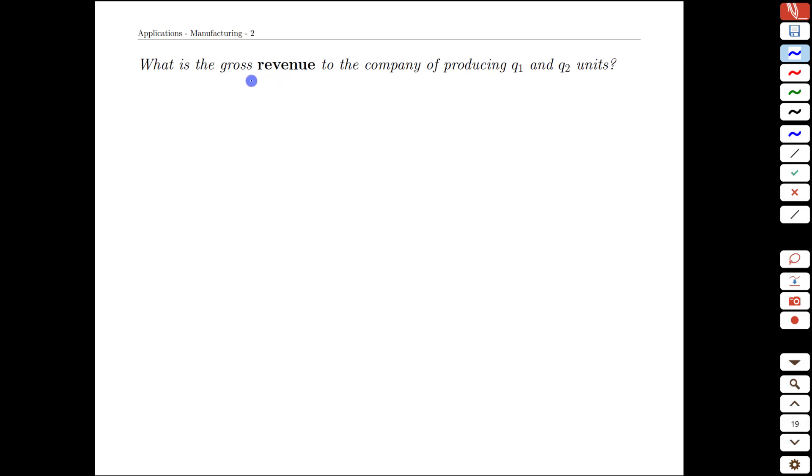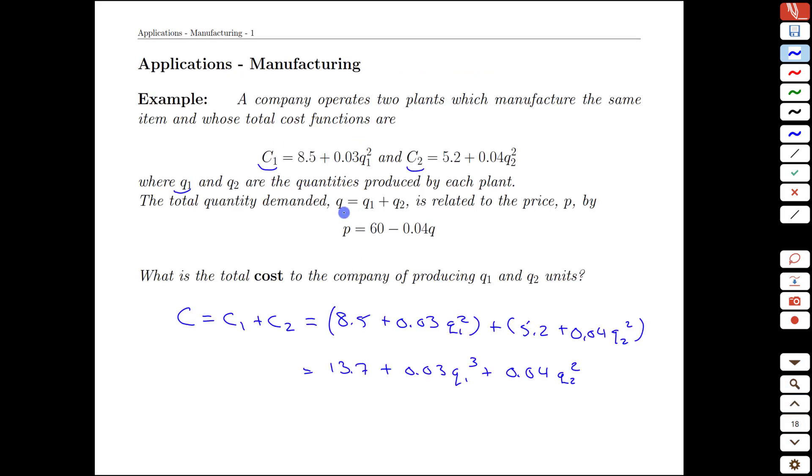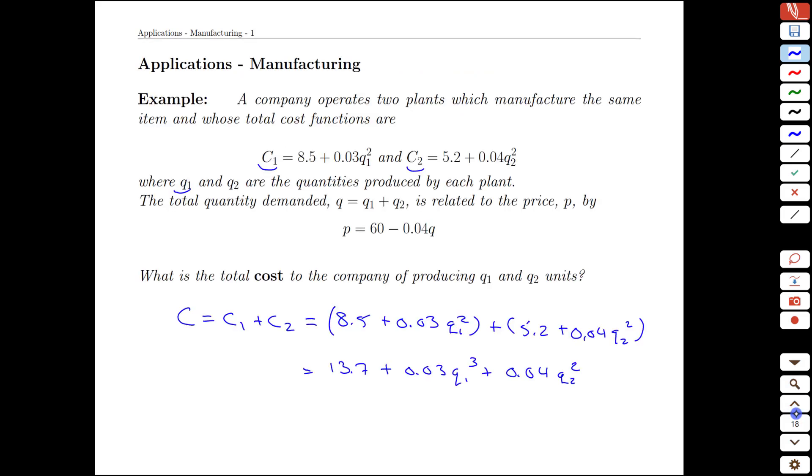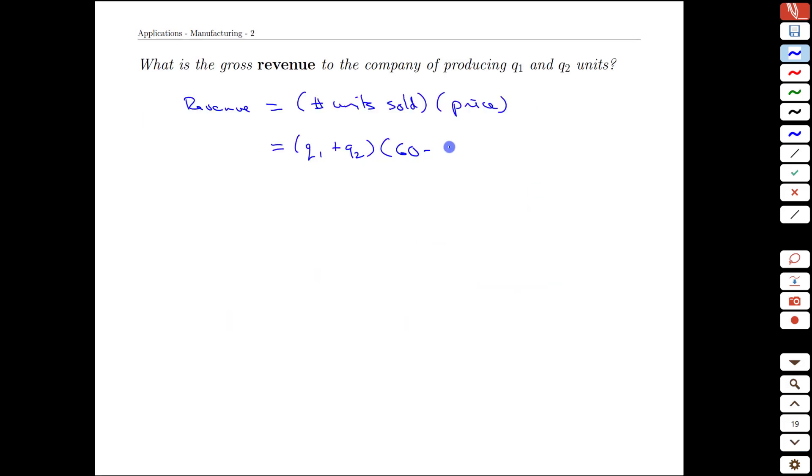If we move to the next slide we want to compute the gross revenue, and the revenue is going to equal the number of units sold and we take that and we multiply it by the price. Now we saw earlier that this price depends on q1 plus q2 so we're going to have an interesting combination there. We are going to produce q1 plus q2 of them and we're assuming that every unit built is sold, however the price of each of those units is going to go down if we produce more. So we have 60 minus 0.04 and here we have q1 plus q2, that being our total production.